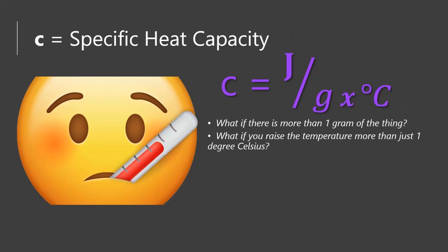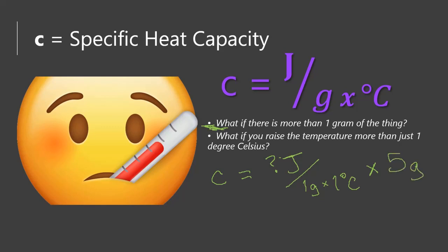What if there's more than one gram of whatever we're talking about? If we have the specific heat capacity of something — that's how many joules per one gram times one degree Celsius — well, what if there's more than one gram? Then we're just going to multiply that many grams by the specific heat capacity. So if it's going to be five grams instead of one gram, we're going to multiply it times five grams.